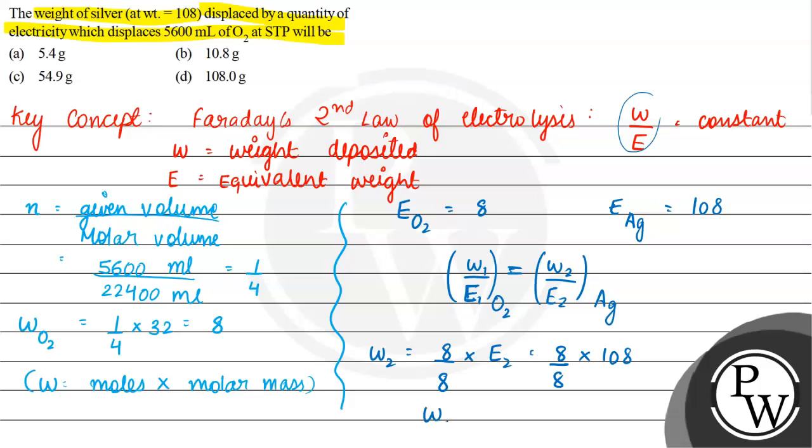So W2, that is the weight of silver deposit, it comes out to be 108 grams. So our answer becomes option D, 108 grams. I hope you understood the question well. Best of luck!